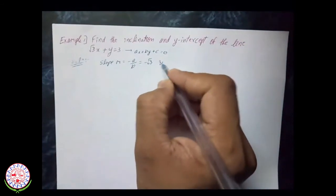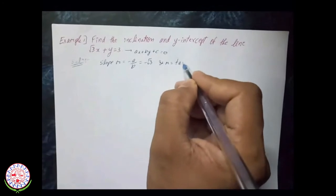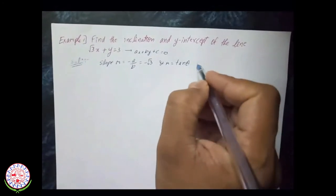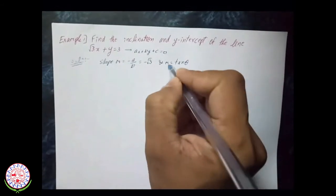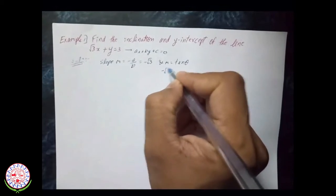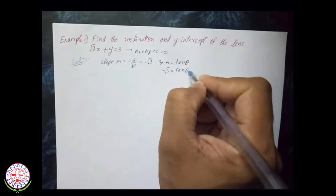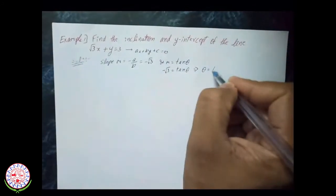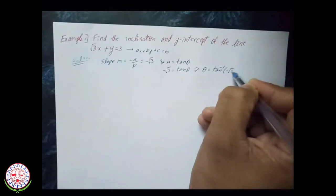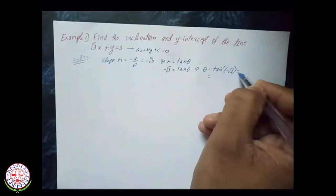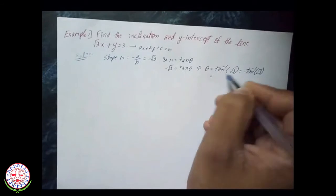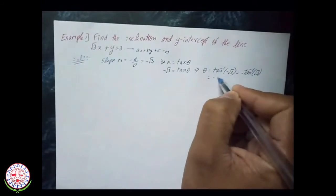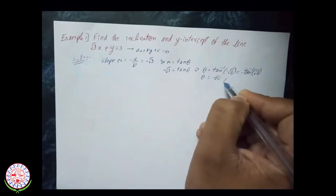We also know that m = tan θ, where m = −√3. To find θ (the inclination), we write −√3 = tan θ, so θ = tan⁻¹(−√3). Taking the minus outside, tan⁻¹(√3) = 60°, so the inclination is −60 degrees.